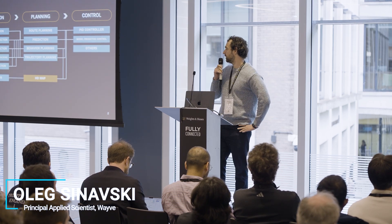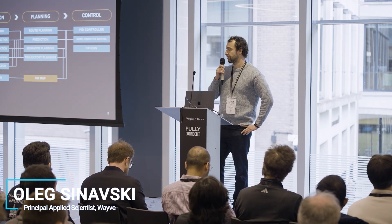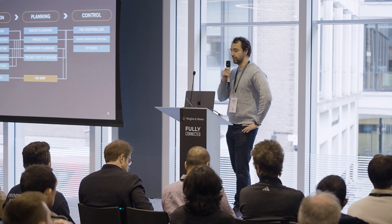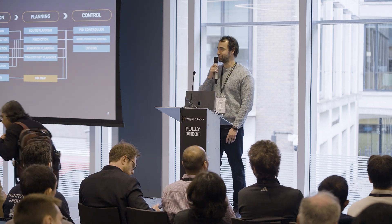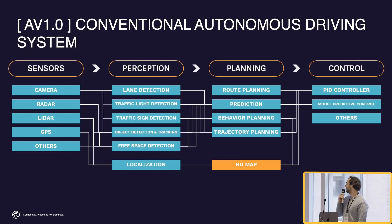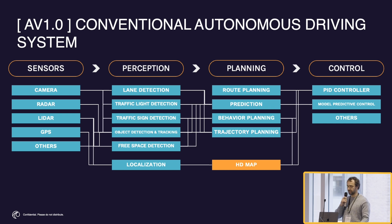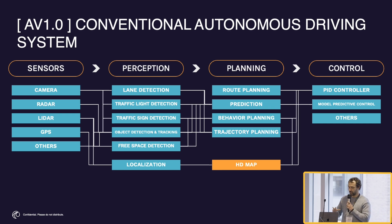WAVE is a company that tries to disrupt the autonomous cars industry. You don't see really many autonomous cars around yet, but still. The typical self-driving stack consists of many components. The typical autonomous car takes many sensors like cameras, lidars, radars, and so on. It has many perception modules, planning modules, and controllers, and the people in those companies try to make them all work together, which is quite tricky.